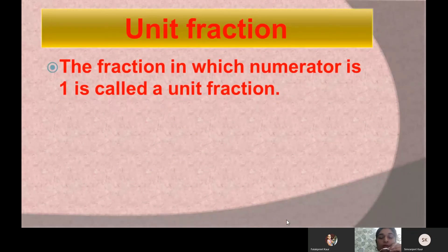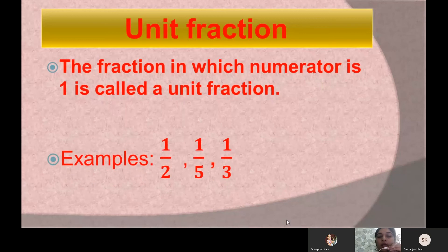Now let us learn about unit fractions. Unit means 1, so those fractions in which we have 1 in the numerator are called unit fractions. For example, 1 by 2, 1 by 3, and 1 by 5 are all called unit fractions because we have 1 in the numerator.